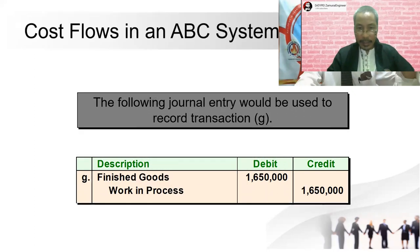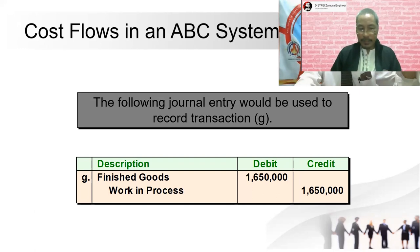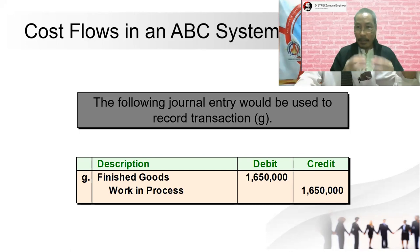And lastly, transaction G: we now have a finished product. We produced 1.65 million dollars worth of cell phones. The journal entry is to debit finished goods and credit work in process for $1,650,000. All of the work in process is now transferred to finished goods. There will come a time that all products being manufactured will be finished — that is called finished goods. Those are the journal entries, and that is the cost flow.